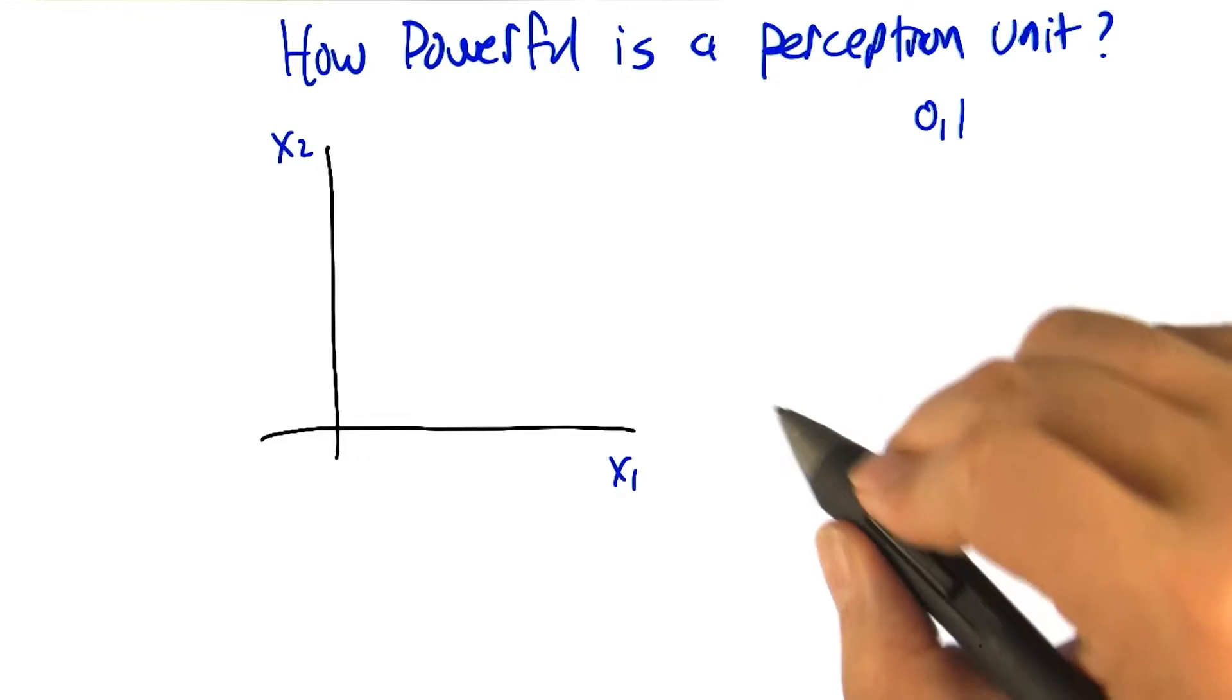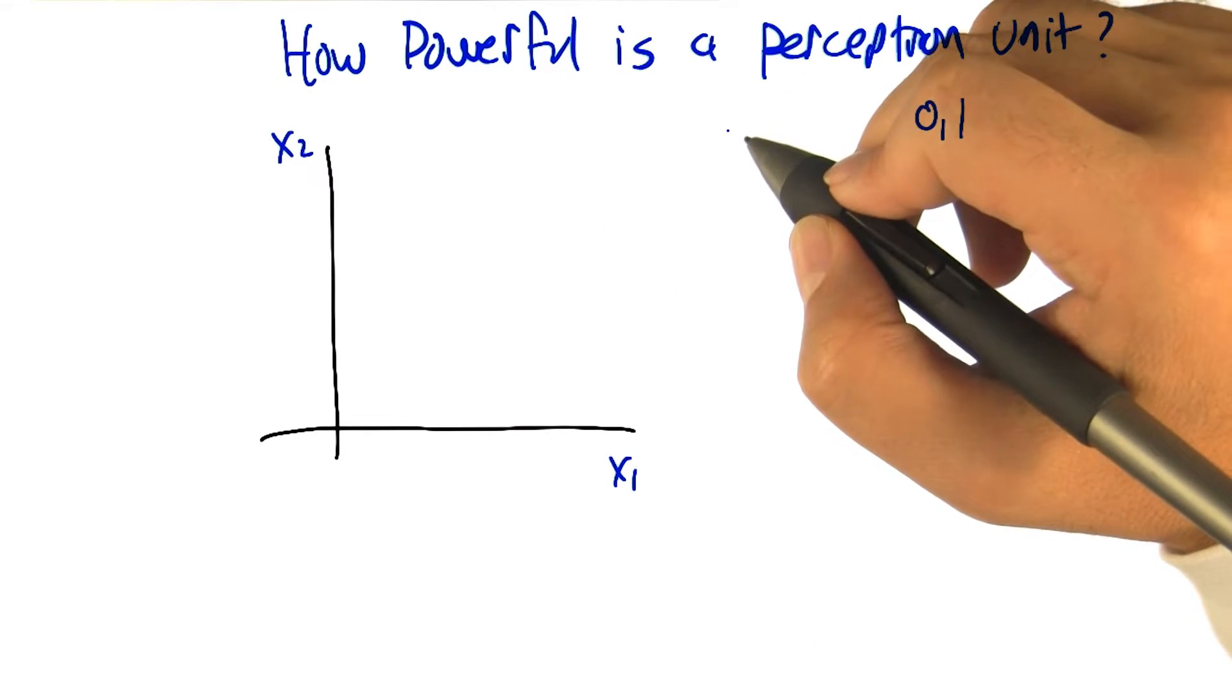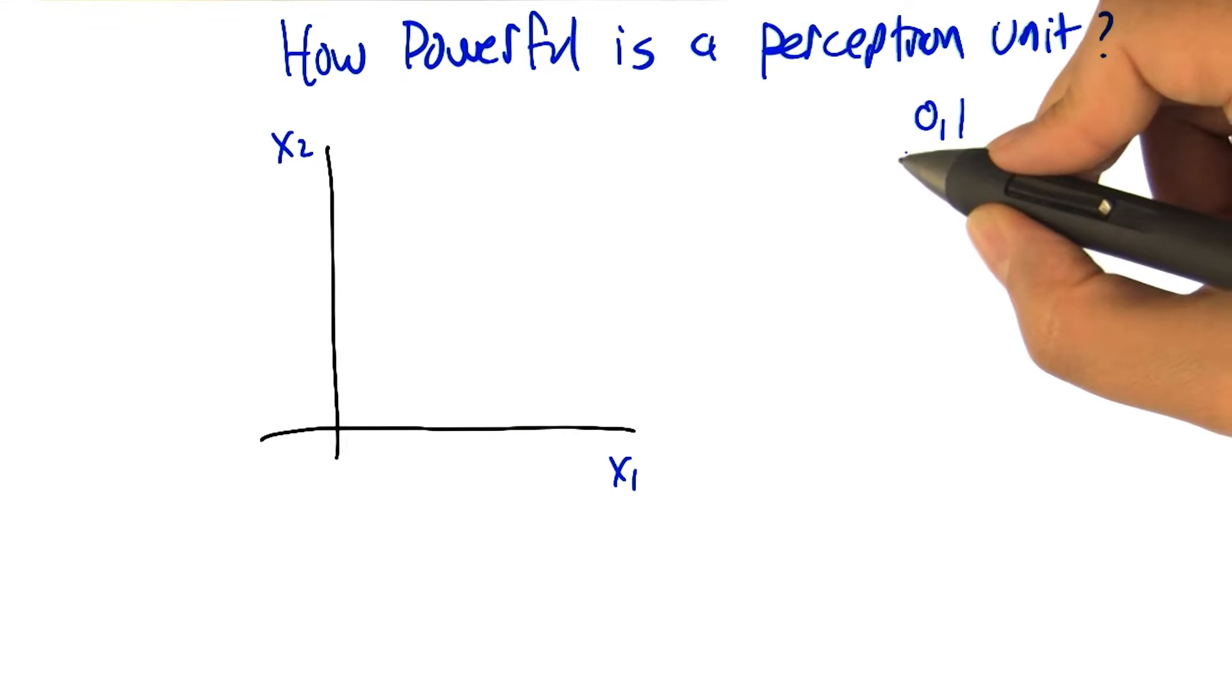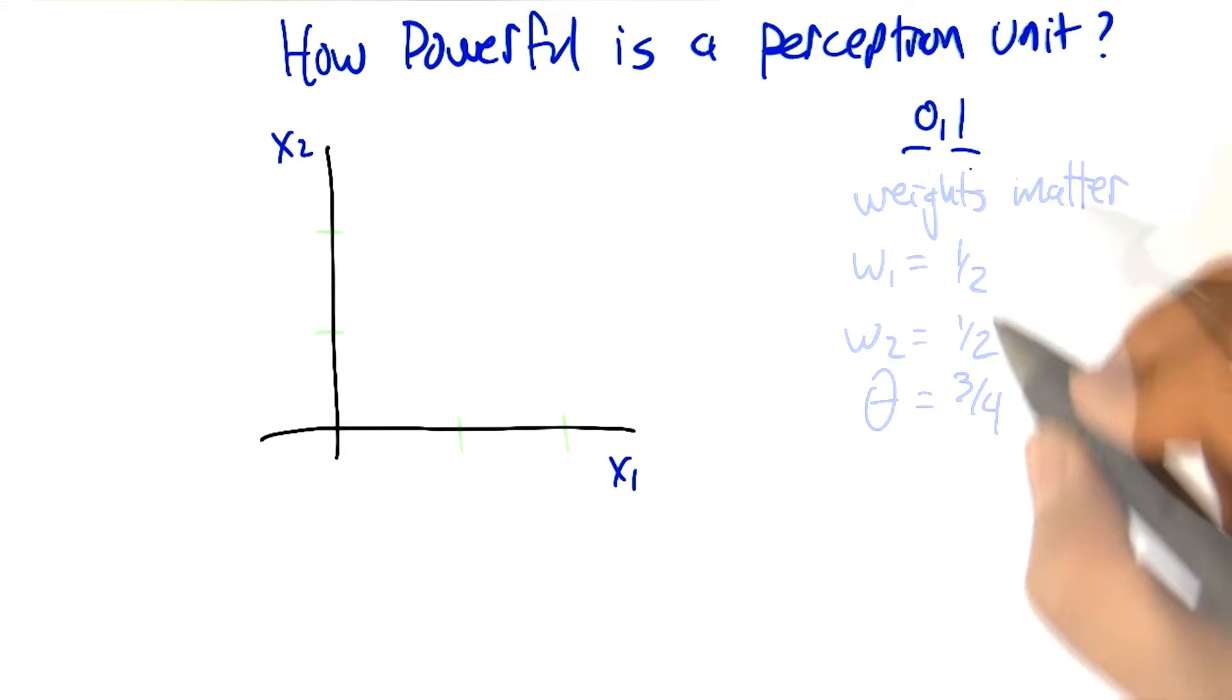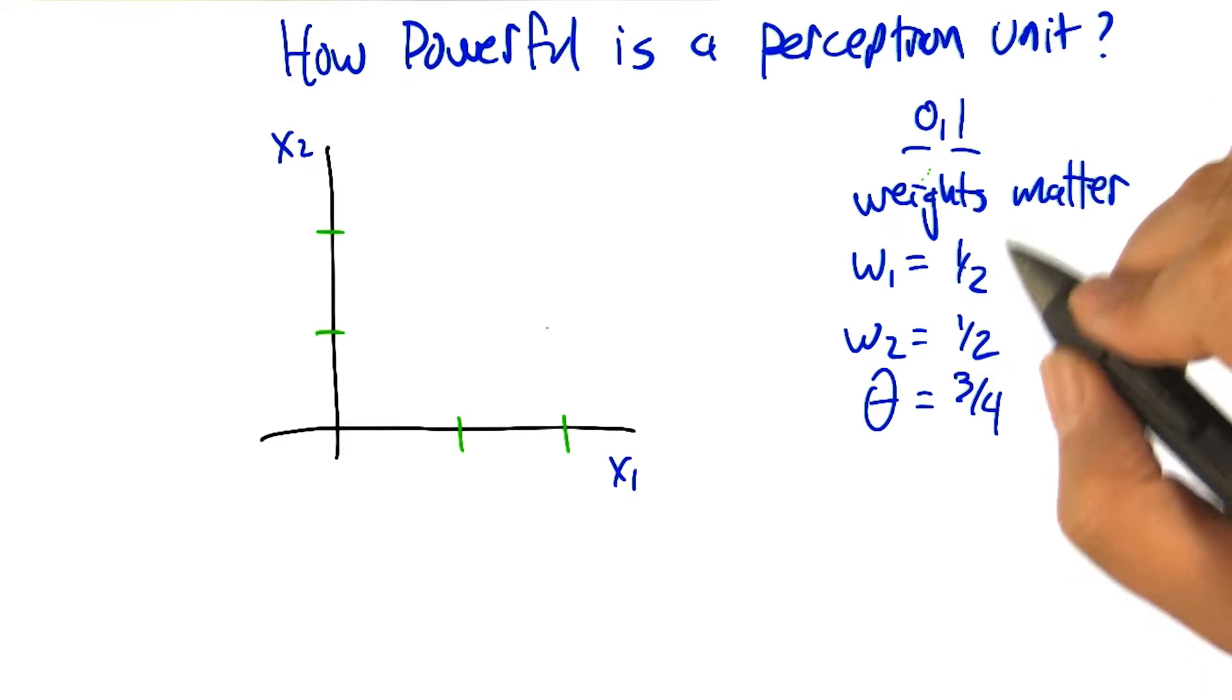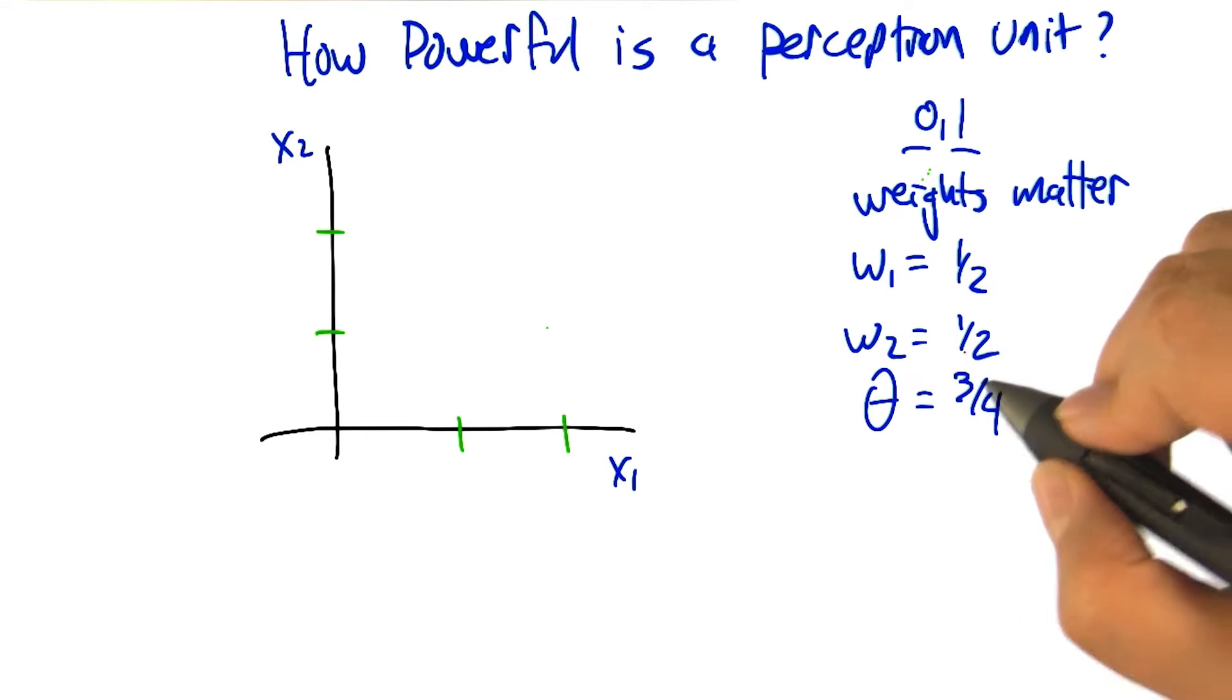Charles, how could we represent the region in this input space that is going to get an output of 0 versus the region that's going to get an output of 1? What are the weights? Right, so indeed the weights matter. Let's give some concrete values to these weights. Let's say that weight 1 is a half, weight 2 is a half, and our threshold theta is 3 quarters.